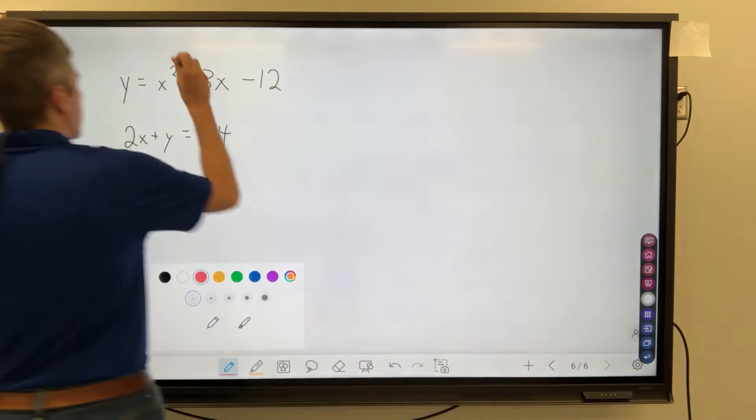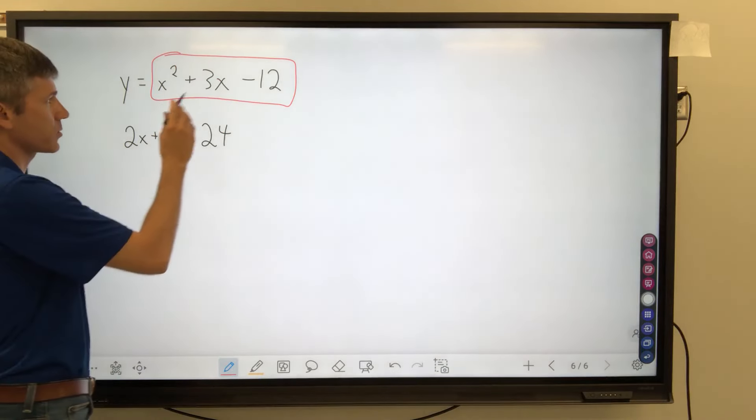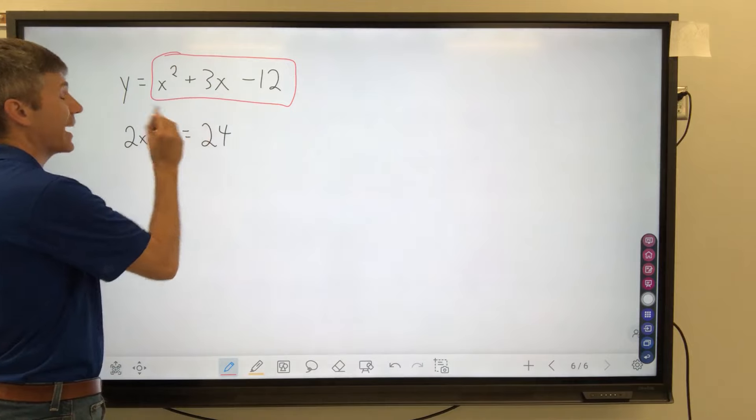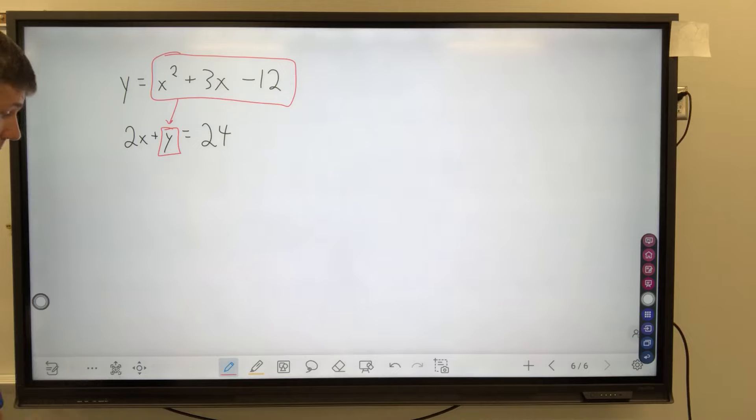Why don't we take this, all of this, this entire right side of this equation, this expression here, x squared plus 3x minus 12. That is equal to y. We're going to plug it in the place of y right there. It's going to be that simple.